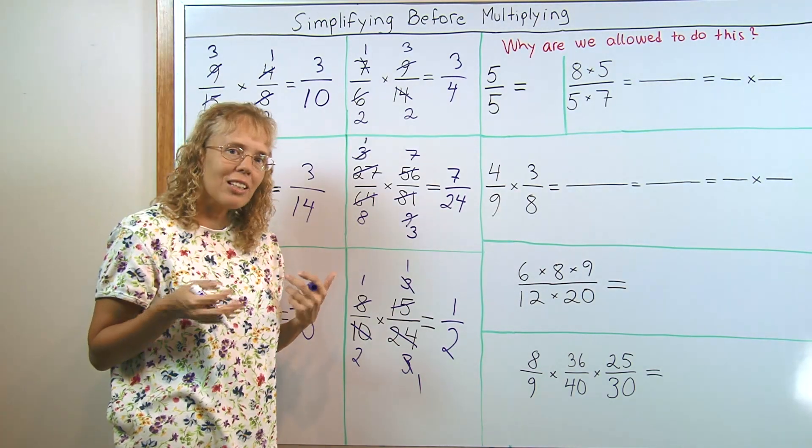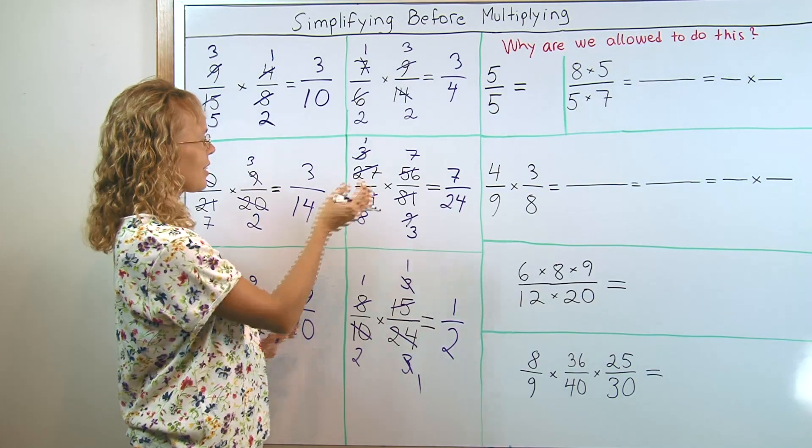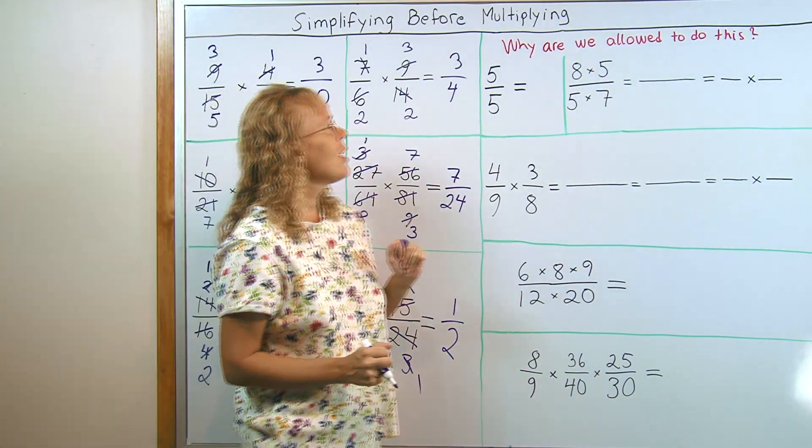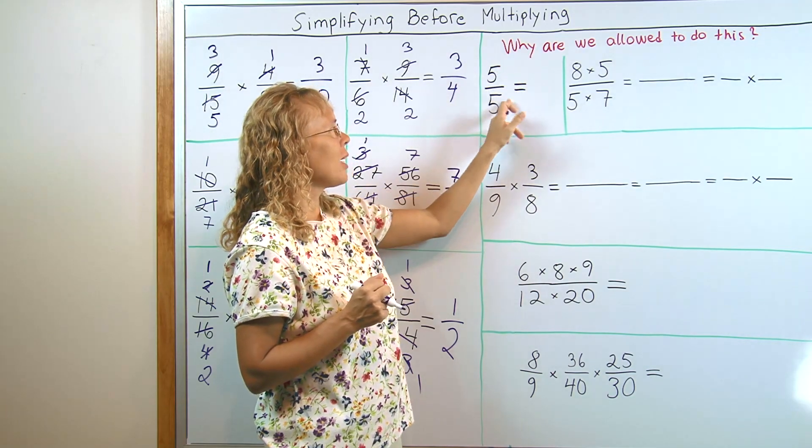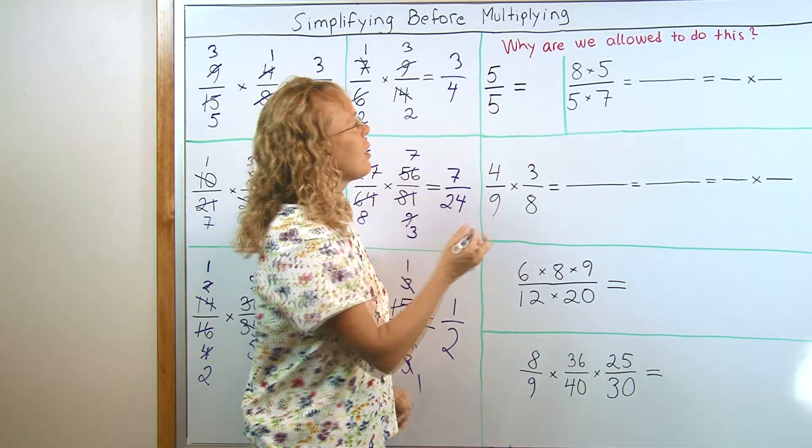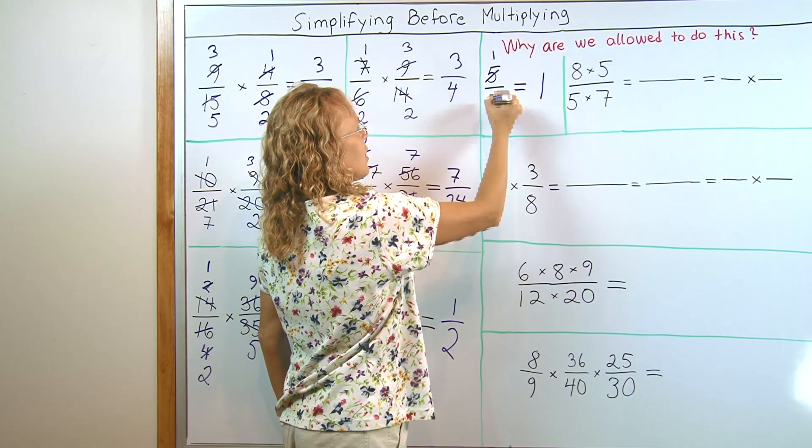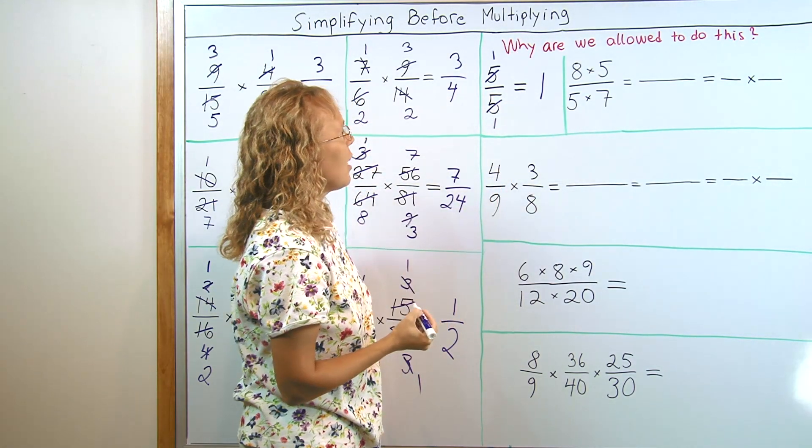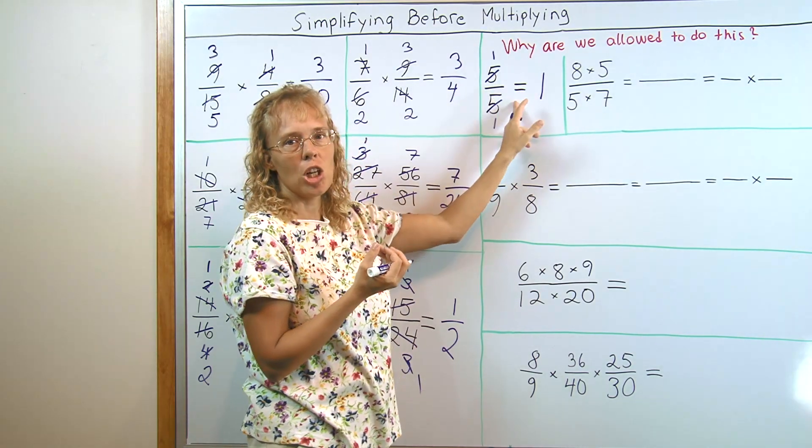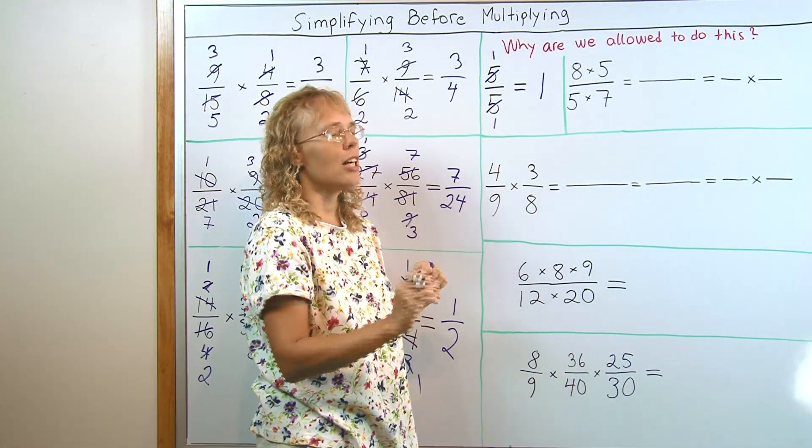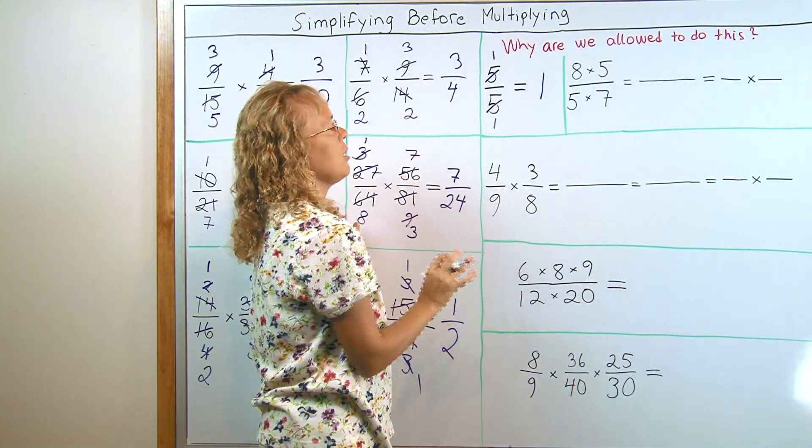Now I want to talk a little about why we can do this. Why are we allowed to do this neat thing? It boils down to this, that a number divided by itself is 1. This is basically where I would simplify, like this. I can cancel out the same number if it is above and below the fraction line, the division line. This is 5 divided by 5. That's all it is. It boils down to that.